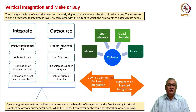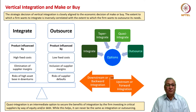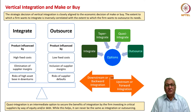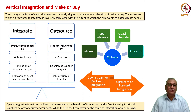Vertical integration is a strategic evolution of the traditional make-or-buy decisions taken by procurement departments. The extent to which a firm would like to integrate is inversely correlated to the extent to which it would like to outsource — integration and outsourcing are two extremes. You can be 100% integrated or 100% outsourced. When you integrate, the product is influenced by high fixed costs, elimination of supplier margins, and risks of a high asset base in downturns.